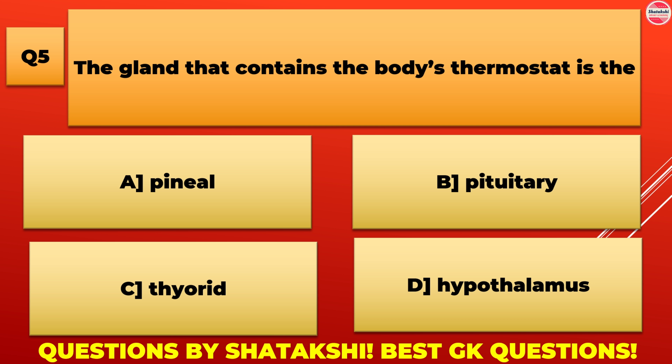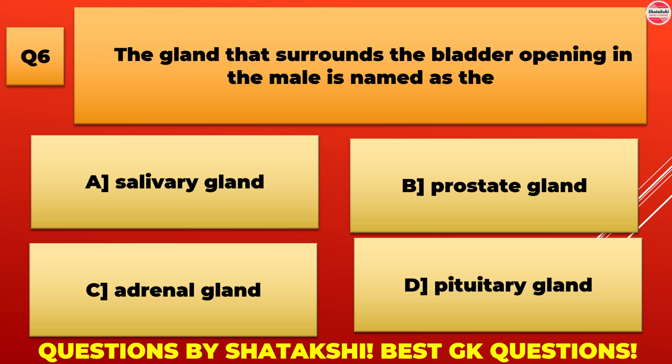The gland that surrounds the bladder opening in the male is named as the: A. Salivary gland, B. Prostate gland, C. Adrenal gland, D. Pituitary gland. B. Prostate gland is the correct answer.